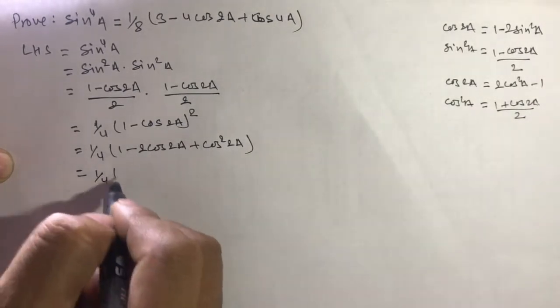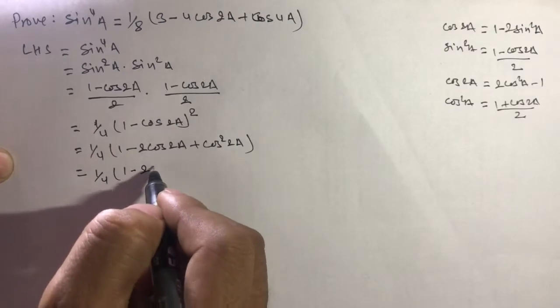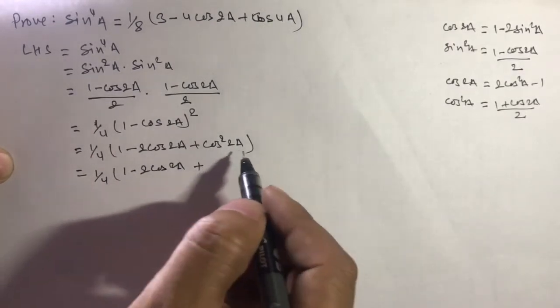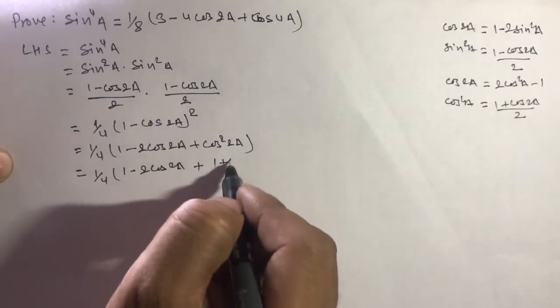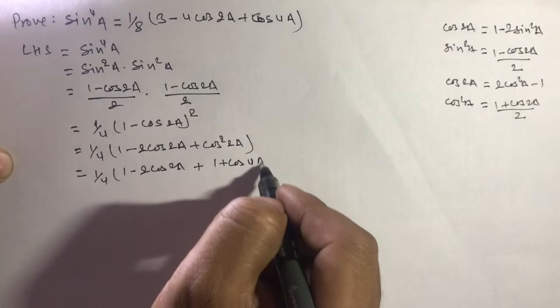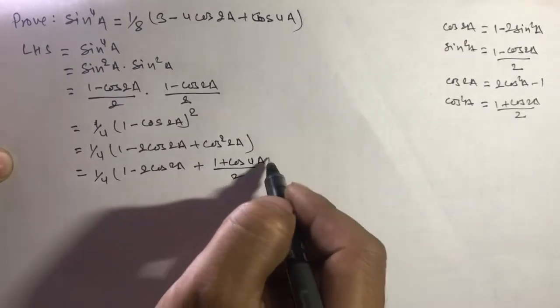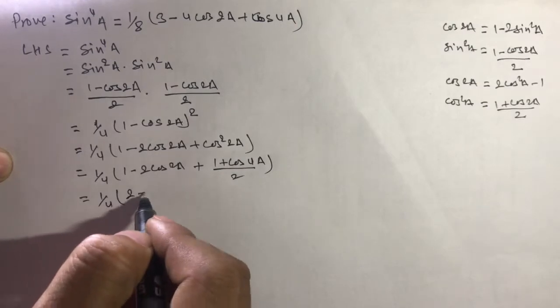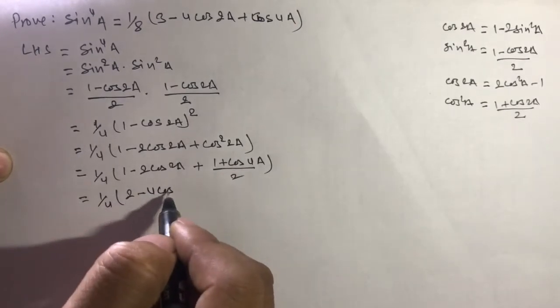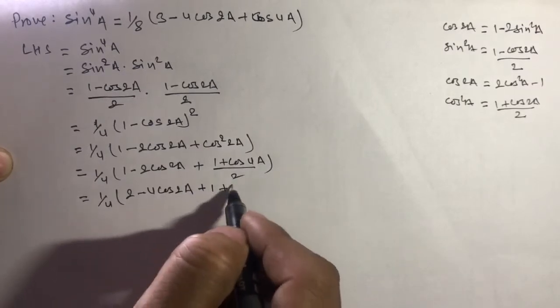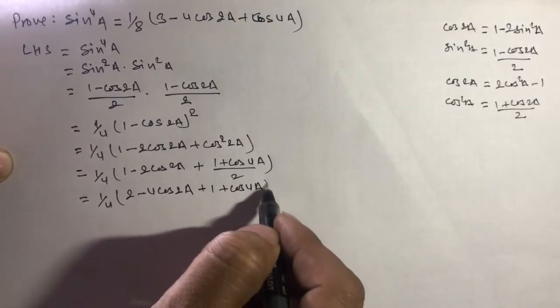Then 1/4 times (1 - 2cos 2a + cos²2a). Substituting cos²2a as (1 + cos 4a)/2.